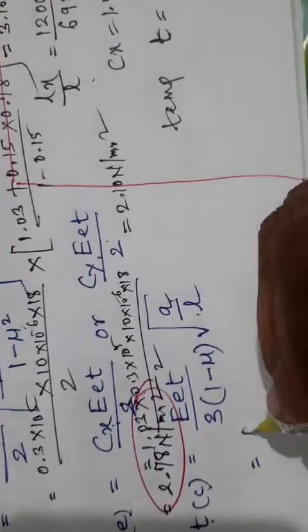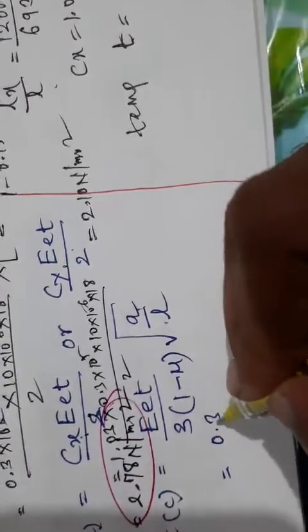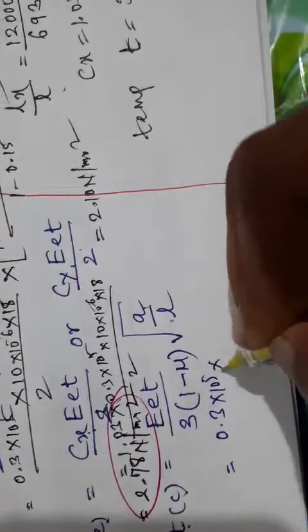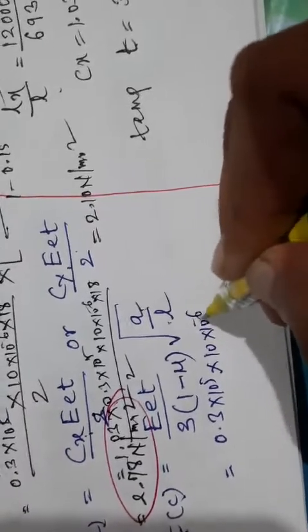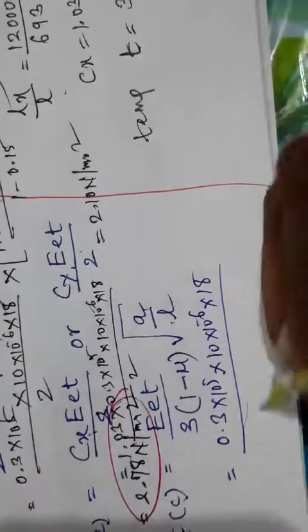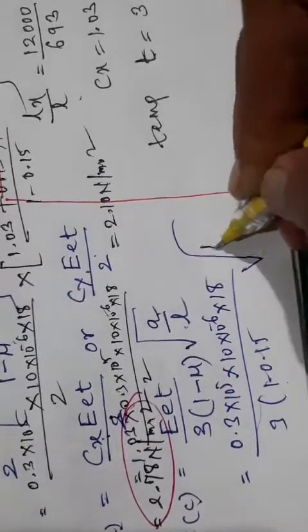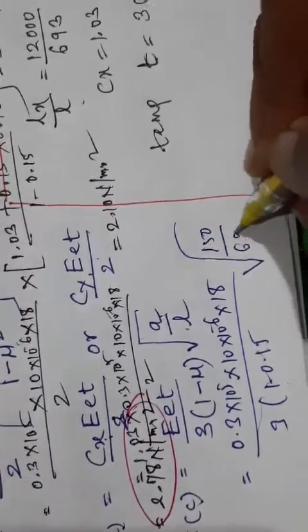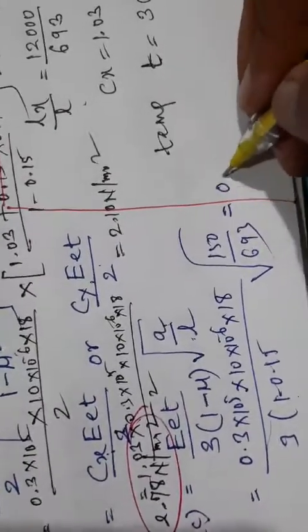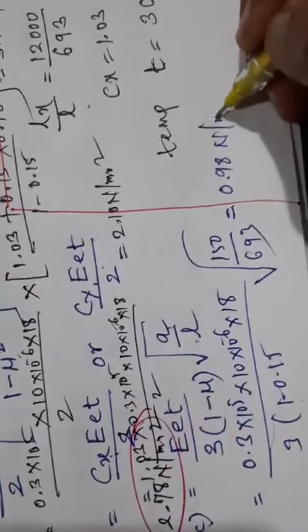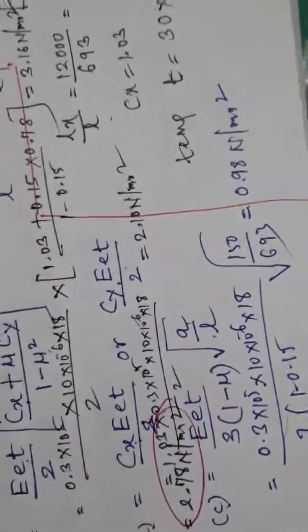For the corner, the formula is 0.3 into 10 raised to 5, times 10 raised to minus 6, into 18 divided by 3, times 1 minus 0.5 root of 150 millimeters divided by 693. This will be around 0.98 Newton per millimeter square.